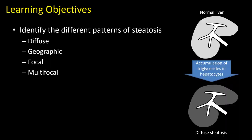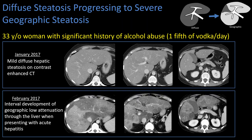Diffuse steatosis is one of the most common forms of steatosis that we see, but we can even see a person with diffuse steatosis develop changes that make that steatosis look inhomogeneous or heterogeneous.